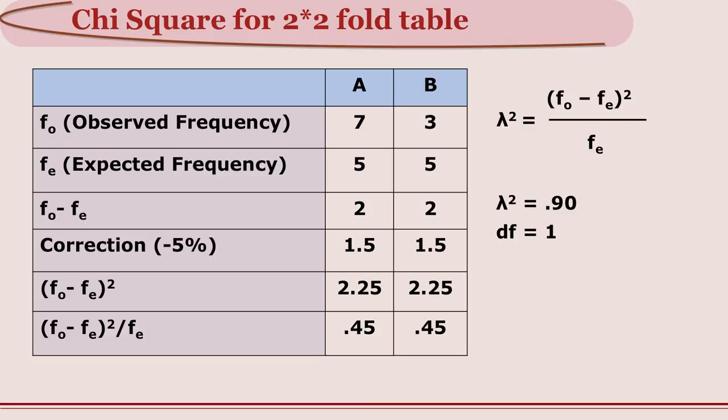We find the difference: 7 minus 5 is 2, and 3 minus 5 is minus 2. Because this is a small sample we apply a correction of 0.5, giving 1.5 on both sides. Squaring 1.5 gives 2.25. The chi square formula is (FO minus FE) squared divided by FE. So 2.25 divided by expected frequency 5 gives 0.45. On both sides we get 0.45, so the total chi square is 0.9.